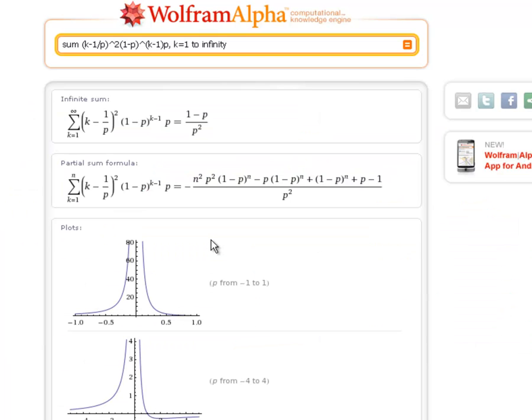And Wolfram Alpha shows us that the variance for a geometric random variable is 1 minus p over p squared. I'm going to go back to the blackboard here.